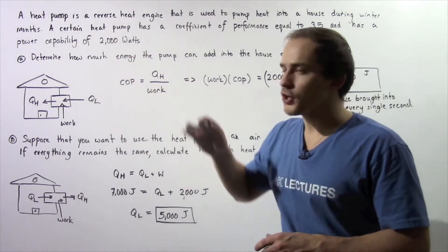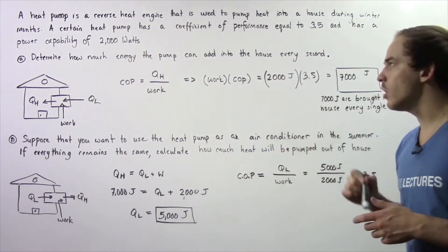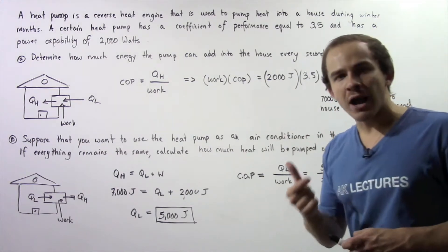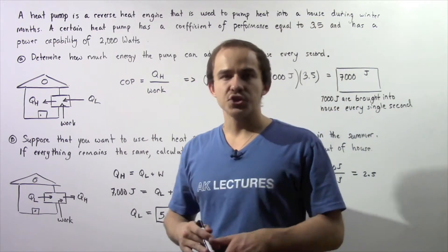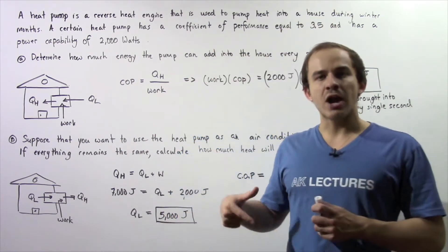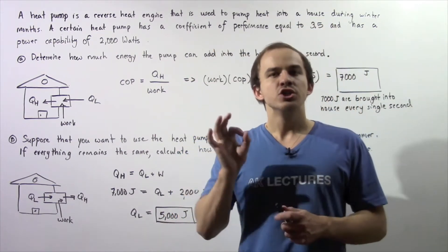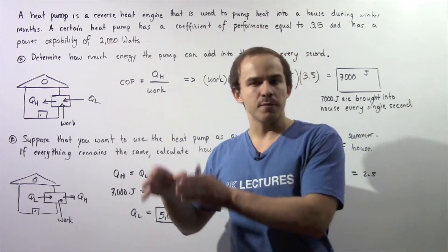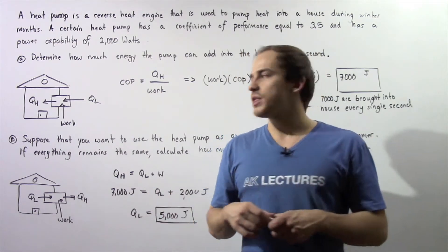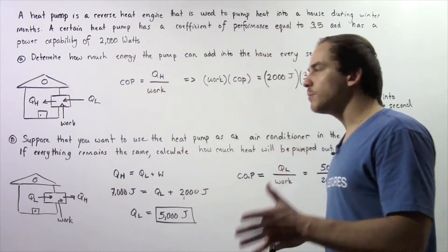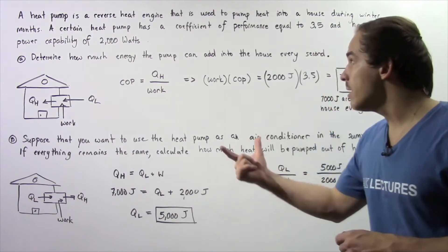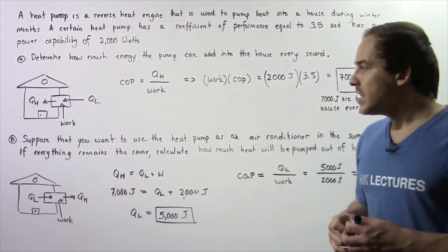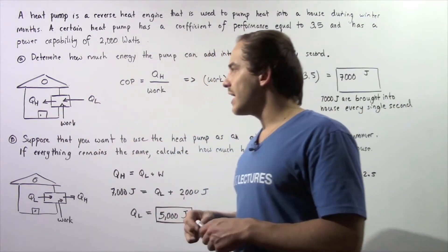Suppose that a certain heat pump has a coefficient of performance equal to 3.5 and has a power capability of 2,000 watts. That basically means our heat pump requires 2,000 joules of energy every single second to bring the energy from the outside into the house. So in part A, determine how much energy the pump can actually bring into the house every single second.